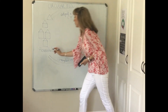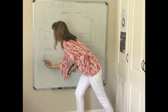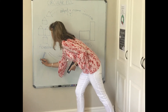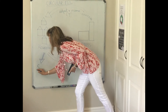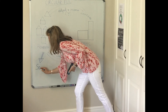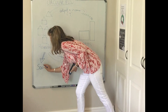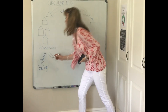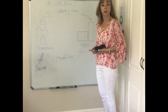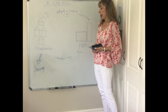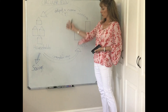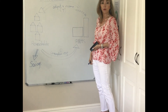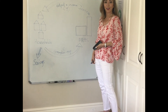Savings represent a leakage from your circular flow. There is a certain amount that households do not spend, and that represents a leakage from the circular flow.